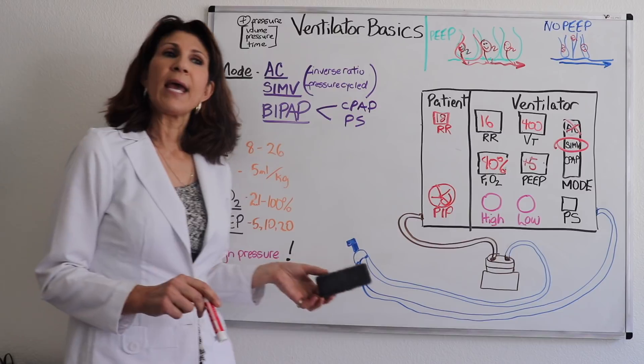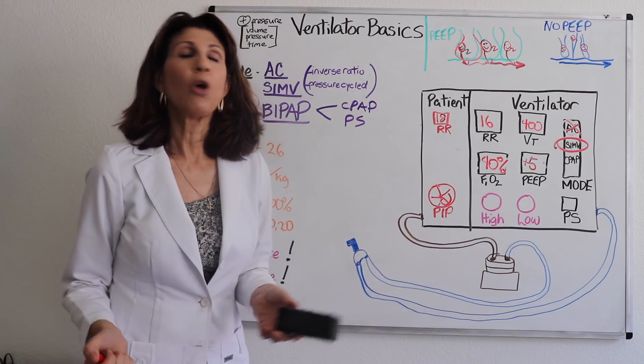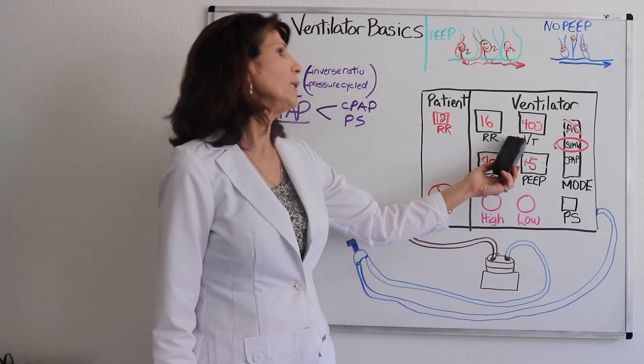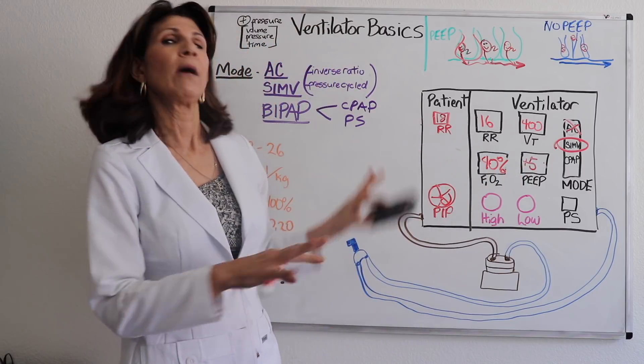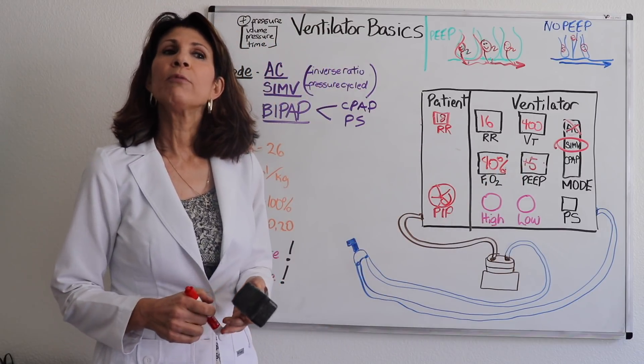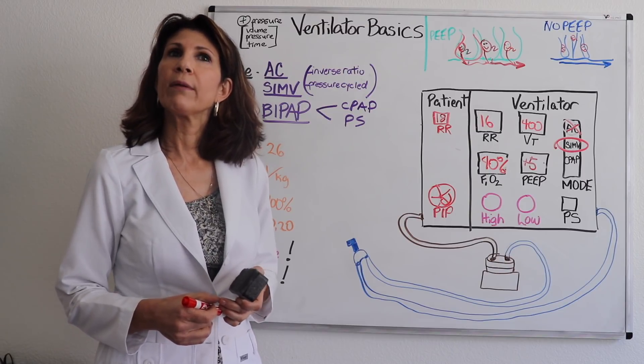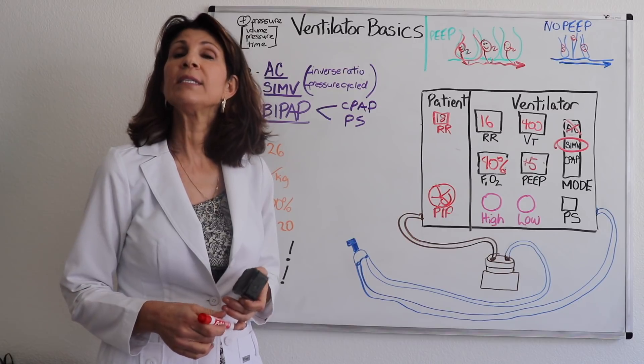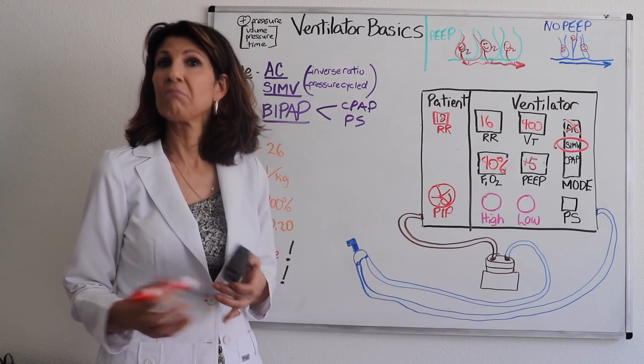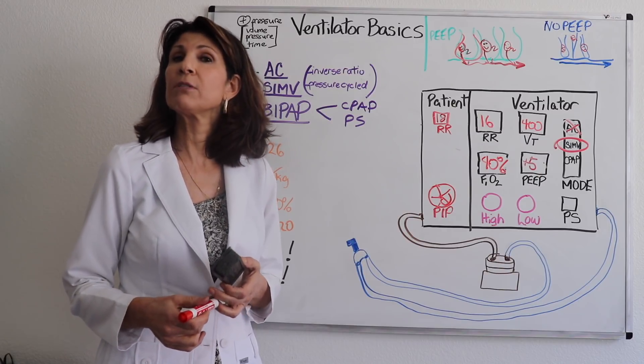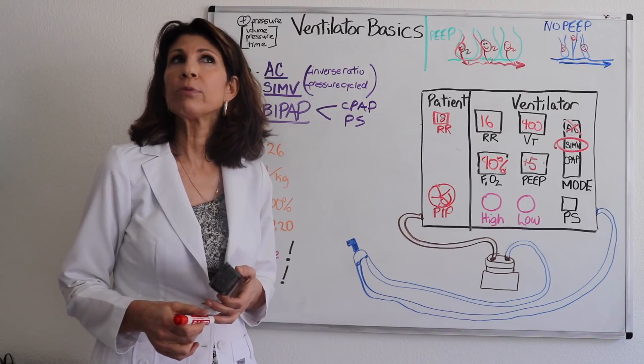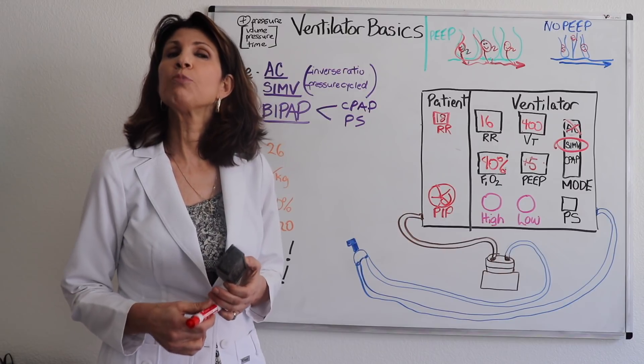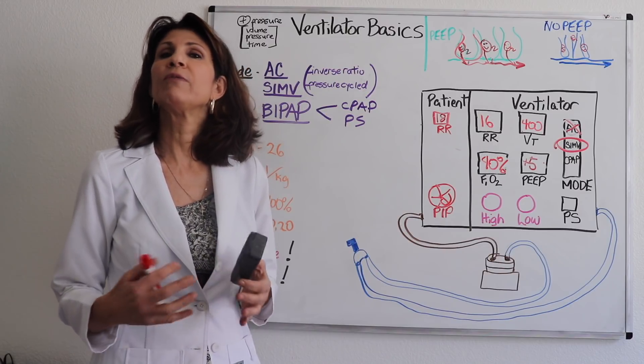Let's talk about the settings on your ABG results. So let's say we have an SIMV of 16 and the ABG comes back with a pH of 7.5 alkalosis and a CO2 of 28 alkalosis. So the patient's in a respiratory alkalosis, bicarb's 25, and the O2 sat is 92% with a PaO2 of 84.